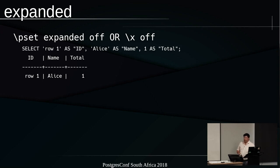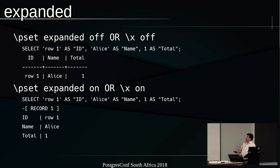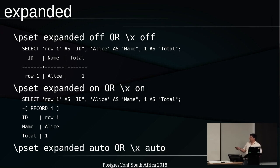Another option is expanded mode, or backslash X. When you enable expanded mode, it displays each record as a two-column table with each column becoming its own row — useful when you have a lot of columns. You can also use backslash X auto, and the client will automatically decide which of the two formats to use for displaying the information.